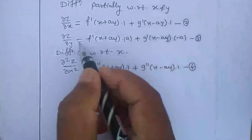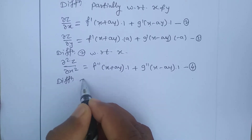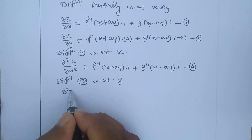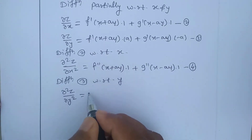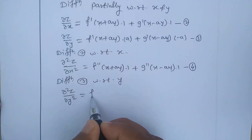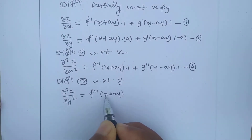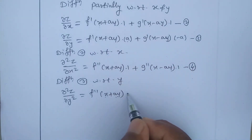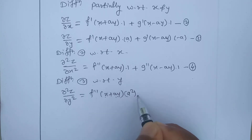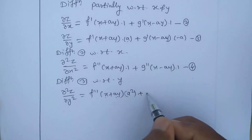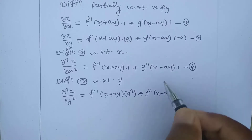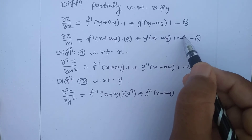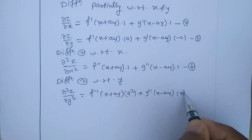Differentiating equation three with respect to y partially: ∂²z/∂y² equals f''(x + ay) times the derivative of (x + ay) with respect to y, which is a, and there is already an a, so we get a·a = a². Then plus g''(x - ay) times the derivative of (x - ay) with respect to y, which is -a, and there is already a -a, so it becomes +a².